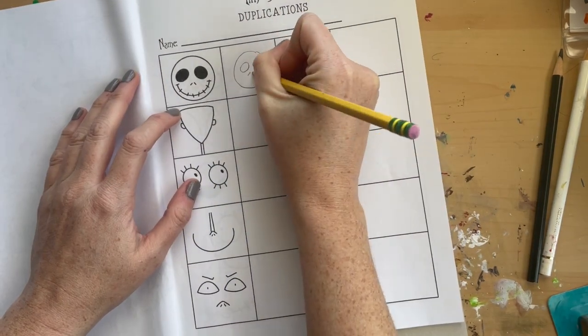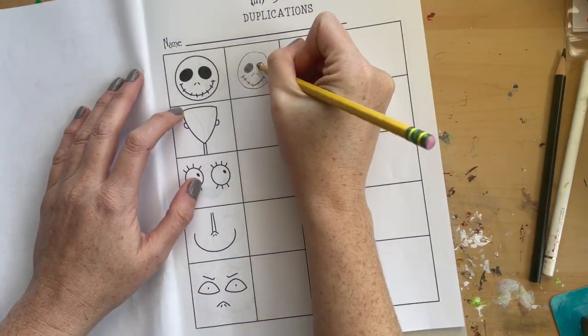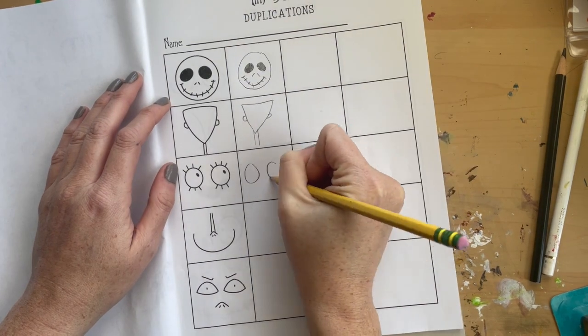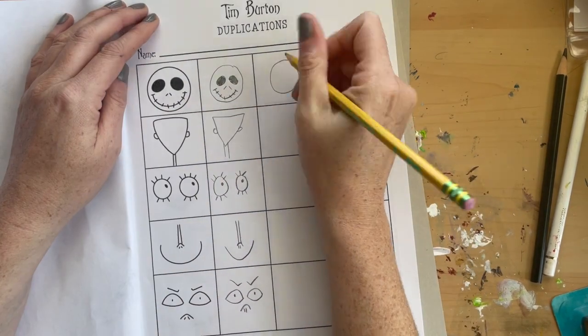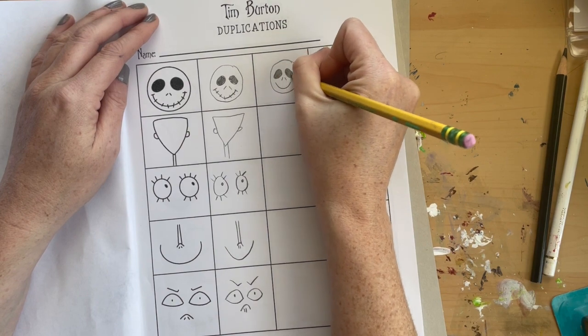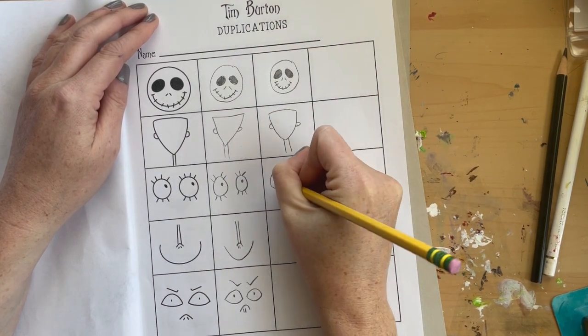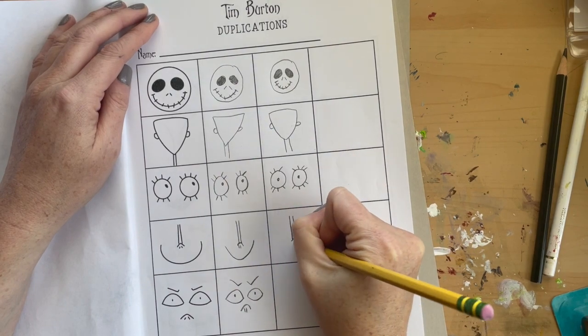Before we begin creating our own self-portrait, practice does help you become better. So in your sketchbook we will practice making duplications of the images you see on the left. For the next three pages of the sketchbook we'll practice making heads, eyes, noses, and mouths.